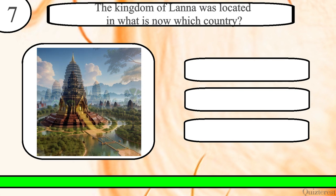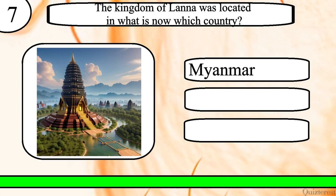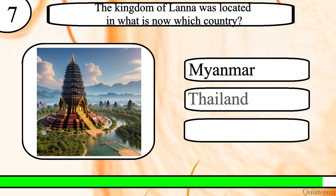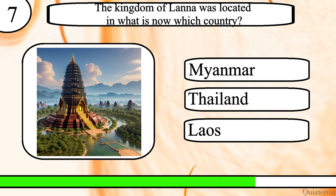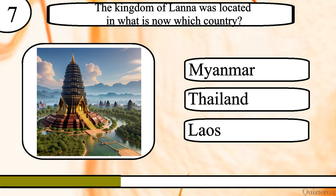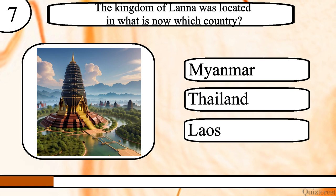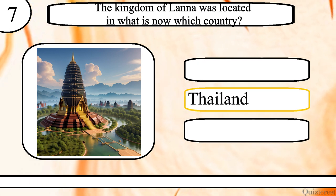Question 7. The kingdom of Lanna was located in what is now which country? Myanmar, Thailand or Laos? The correct answer is Thailand.